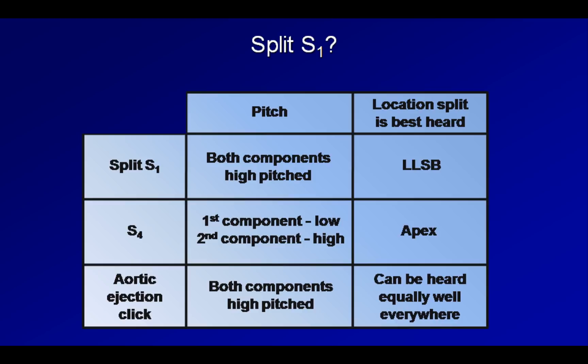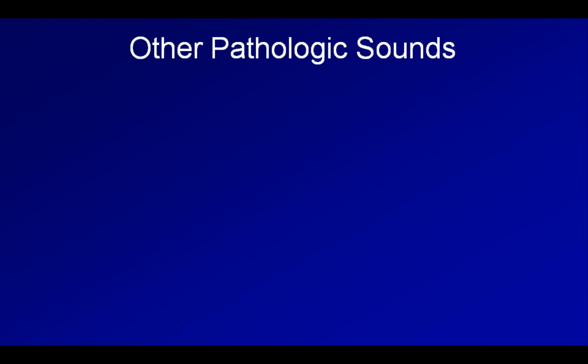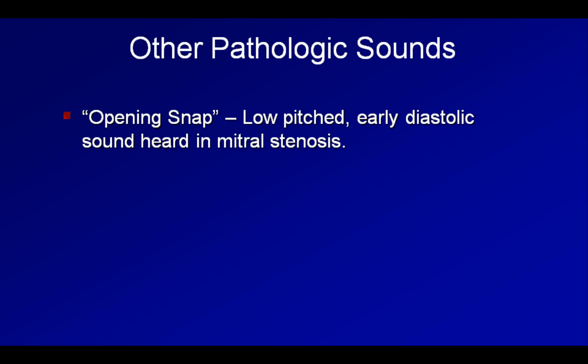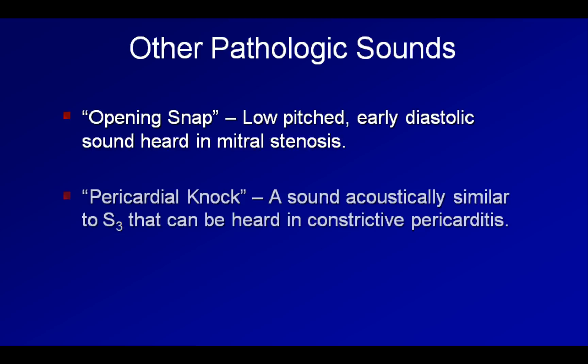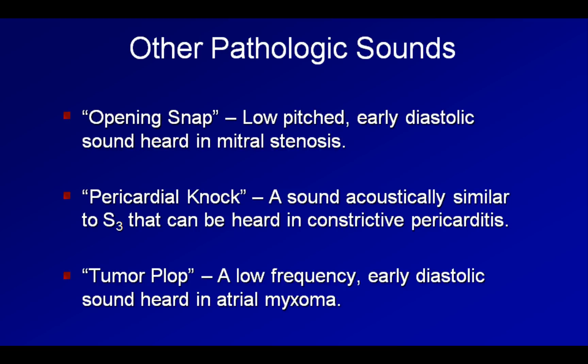There are three more pathologic heart sounds which you may hear about from time to time. I will describe them only briefly as they are all very uncommon. First, an opening snap is a low-pitched, early diastolic sound heard in mitral stenosis, presumably caused by a sudden opening of the abnormal mitral valve leaflets. The pericardial knock is a sound acoustically similar to an S3 that can be heard in constrictive pericarditis. It is sometimes described as being slightly higher-pitched and occurring earlier in diastole than S3, and other times the two are described as being indistinguishable. Lastly, the tumor plop is a low-pitched, early diastolic sound occasionally heard in the presence of an atrial myxoma. It occurs when a relatively mobile tumor moves in front of the mitral valve during diastole. It can cause a functional mitral stenosis and may be followed by a low-pitched diastolic murmur similar to MS.